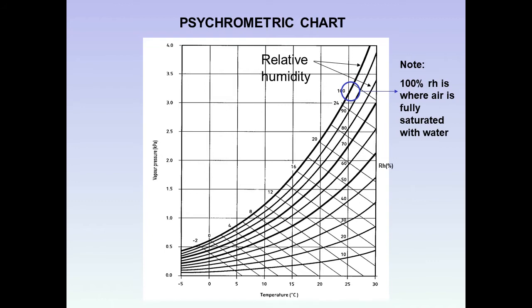The scale on the left is vapor pressure. So let's imagine that the temperature and relative humidity recorded were 60% RH at 20 degrees. There's our 60% RH line and 20 degrees at the bottom, and where those two meet we put a mark.